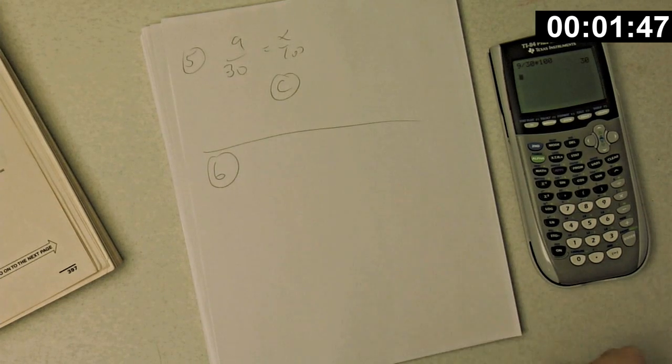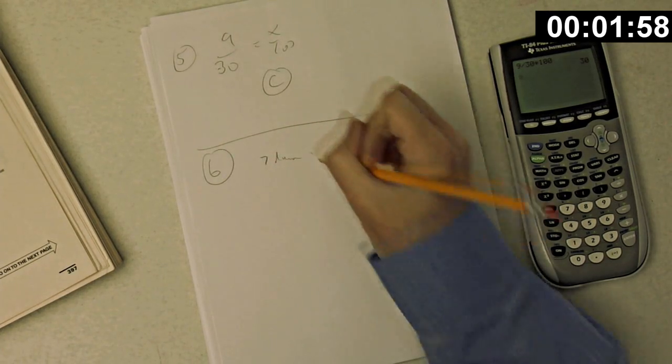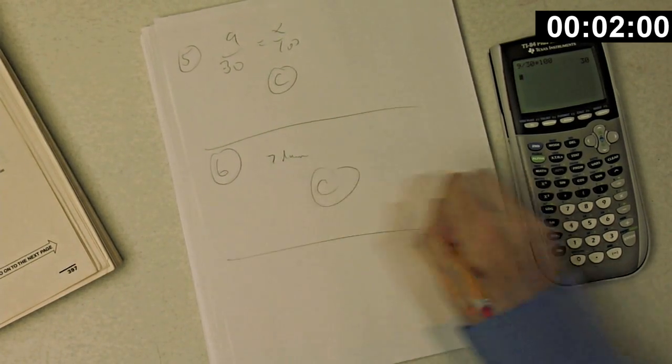Okay, number six. In the figure above AB equals CD, what is the value of T? Let's see. CD has length 10, so AB has length 10, 3 up, 7 down, so it would be negative 7. Choice C.